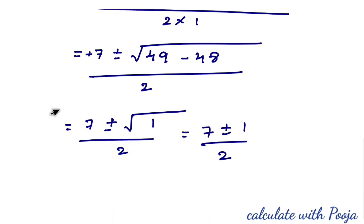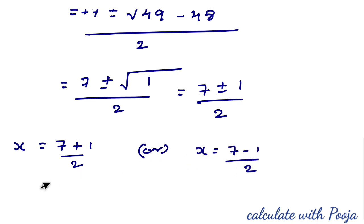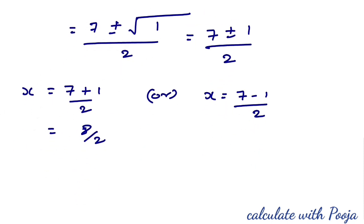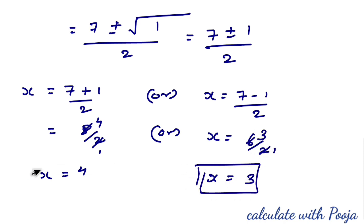Separating the two cases: x = (7 + 1)/2 = 8/2 = 4, or x = (7 − 1)/2 = 6/2 = 3. So x = 4 or x = 3 — the roots by using the formula method.